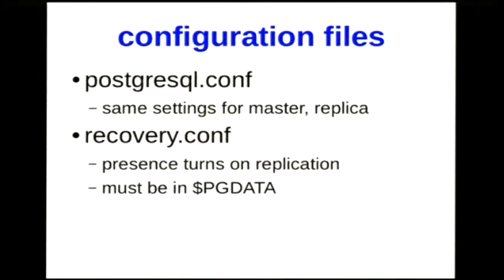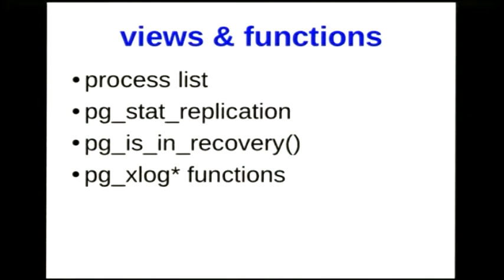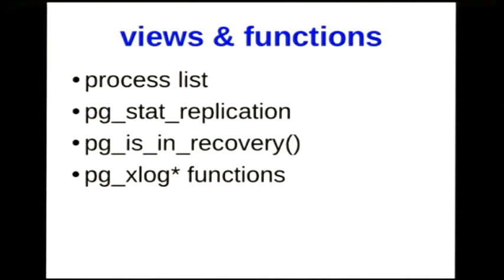You can link recovery.conf, but I recommend putting the actual file in the data directory and linking it elsewhere, because when you promote a replica to master, Postgres moves the file. We also have a set of views and functions to help you administer Postgres. You can look at the process list — that's a good troubleshooting method when everything else has failed. In general, you'll be using the view pgstat_replication on the master, which tells you the status of all connected replicas. There's also pg_is_in_recovery, a function you run on the replica, and functions that check the status of the data stream that generally start with pg_xlog.